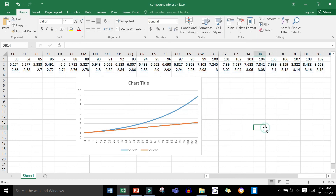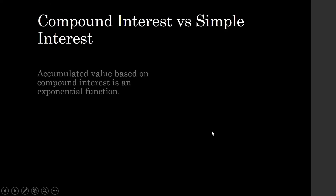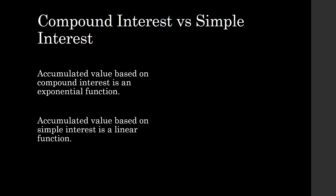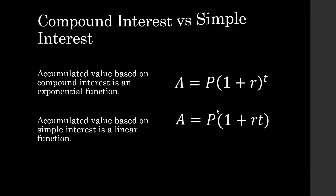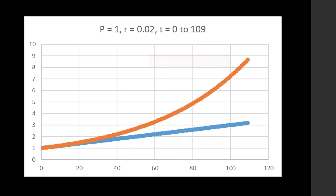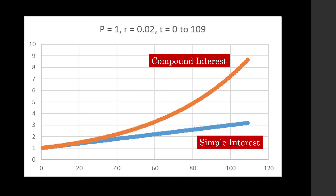Here are the graphs of the two investments. The blue one is growing by compound interest and the orange one is growing by simple interest. Compound interest grows exponentially, while simple interest grows linearly.